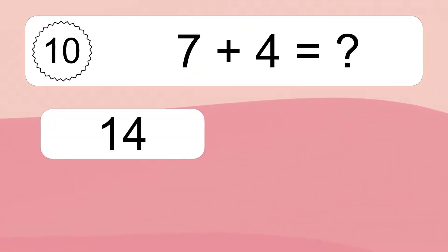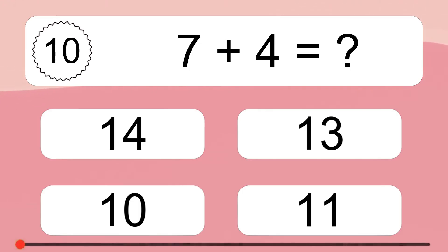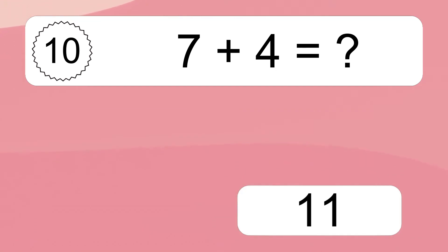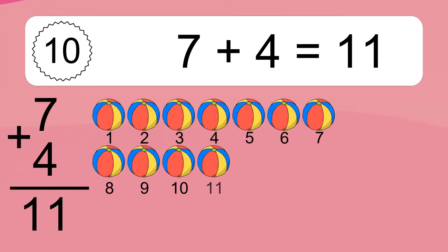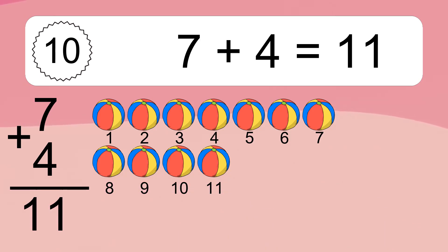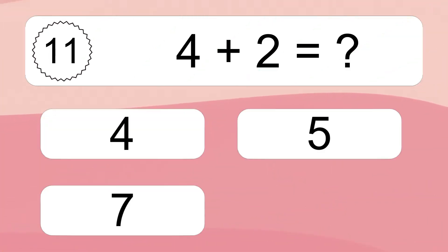Seven plus four equals what? Seven plus four equals eleven. Let's count it: one, two, three, four, five, six, seven, eight, nine, ten, eleven.